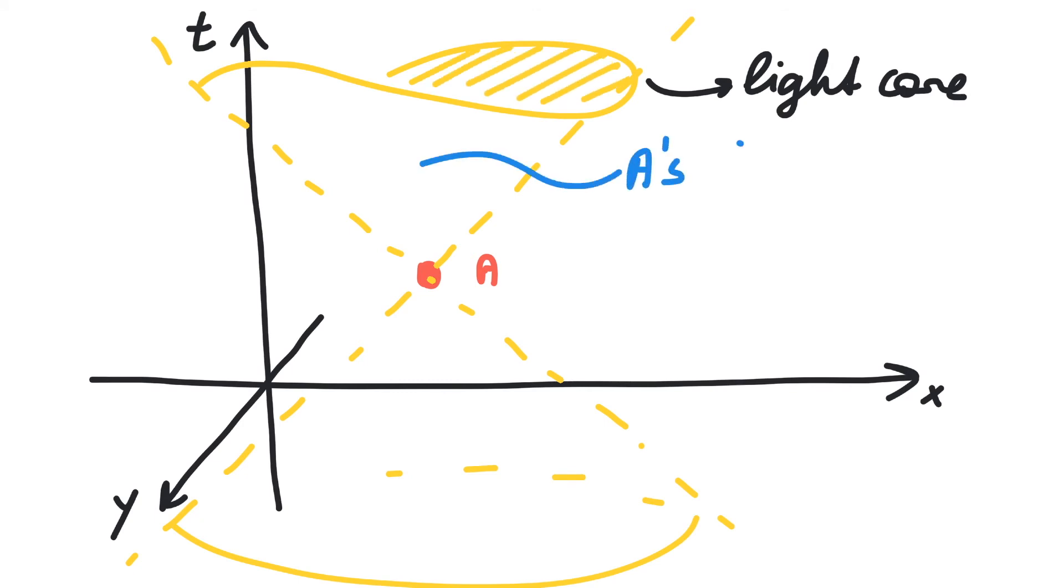The part above A is called its future, the part below is its past, and everything else is called elsewhere.